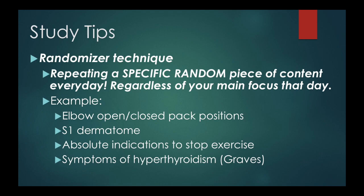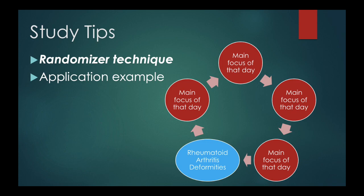Examples I used during NPTE studying because I kept forgetting them: the elbow open and closed pack positions — I kept confusing humeral ulnar, humeral radial, and proximal radial ulnar. So I put that into my studying every single day regardless of my main focus. The S1 dermatome was another one — I made sure not to confuse it with L5. S2 absolute indications for exercise, and symptoms of hyperthyroidism were others I had to repeat consistently. I have an illustration to show what the randomizer technique looks like in application.